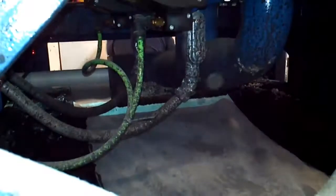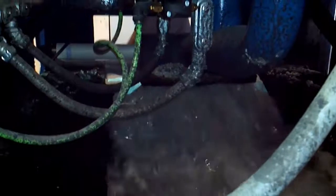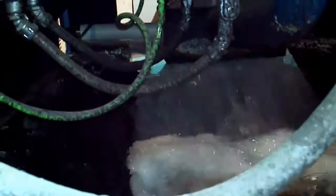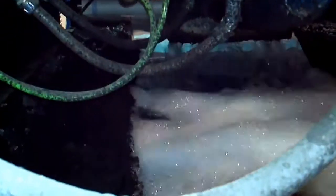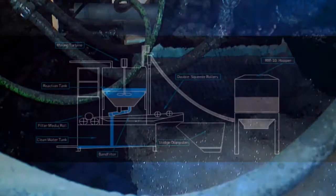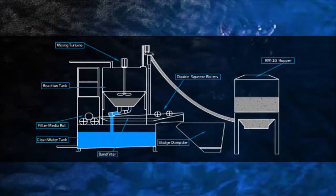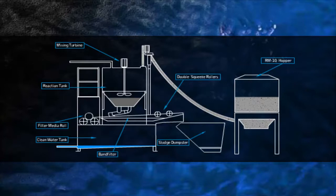After the solids have settled, the clean water valve is opened. Treated water passes through the filter media on the conveyor and into the clean water tank. The filtered water can then be discharged directly into the sewer system or reused in other applications.